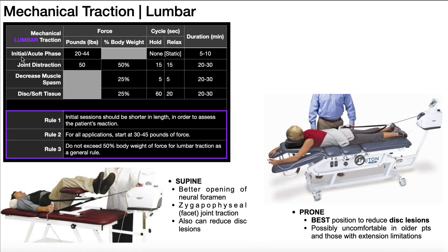For the initial or subacute phase — after 72 hours past acute inflammation — we're going to use anywhere between 20 and 44 pounds of force. This is again static traction with a duration of five to ten minutes. For joint distraction, we're going to use 50 pounds of force, hold that traction for 15 seconds, then relax for 15 seconds, for a treatment duration of 20 to 30 minutes.